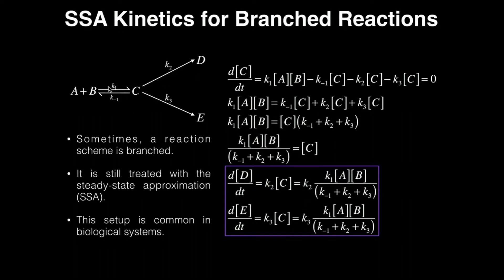Well, let's look at what produces C. K1. So K1 is positive, and the reactants with respect to K1 are A and B. We also see C is eliminated by K-1, so that's negative, minus K-1 times C, because C is the reactant with respect to K-1.